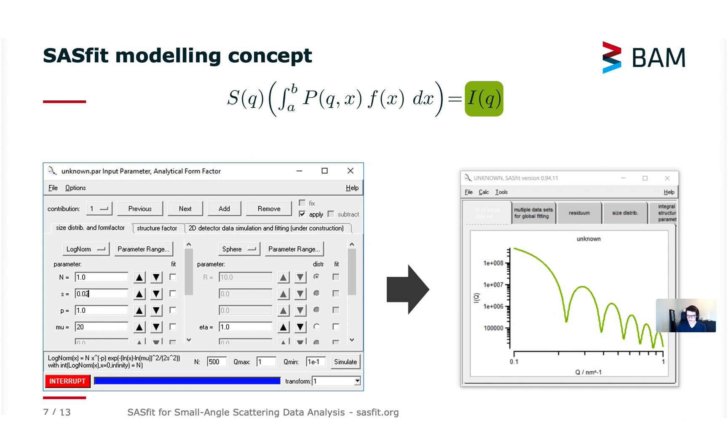Here again we have the building blocks of the scattering formula. The form factor is highlighted in red, corresponds to the right side of this parameter window and there's a size distribution here highlighted in orange which is on the left side of the parameter window and on another tab you can add and configure a structure factor.